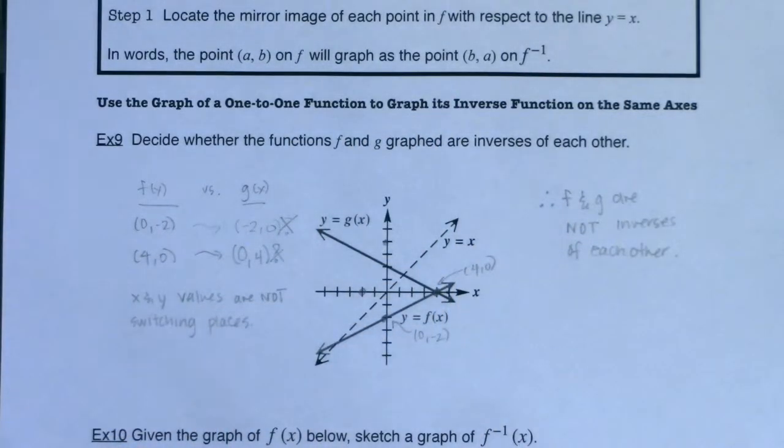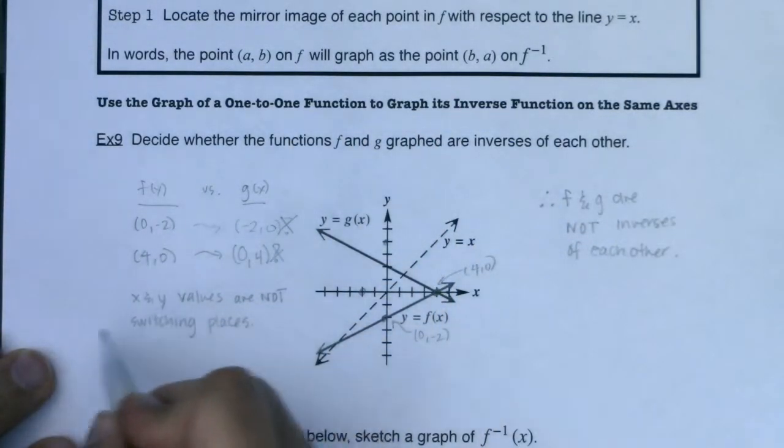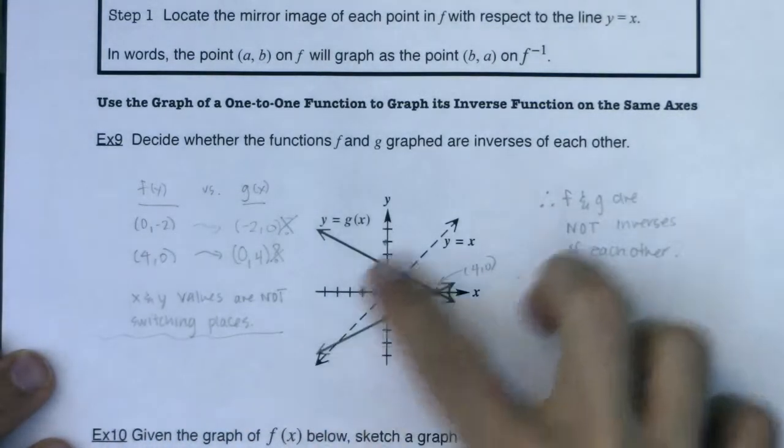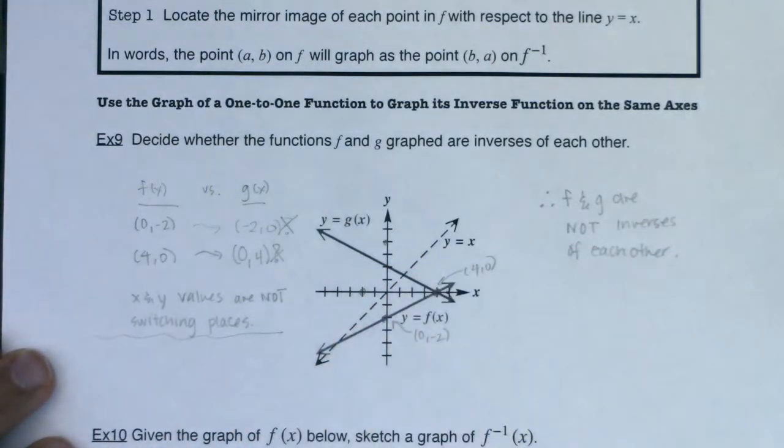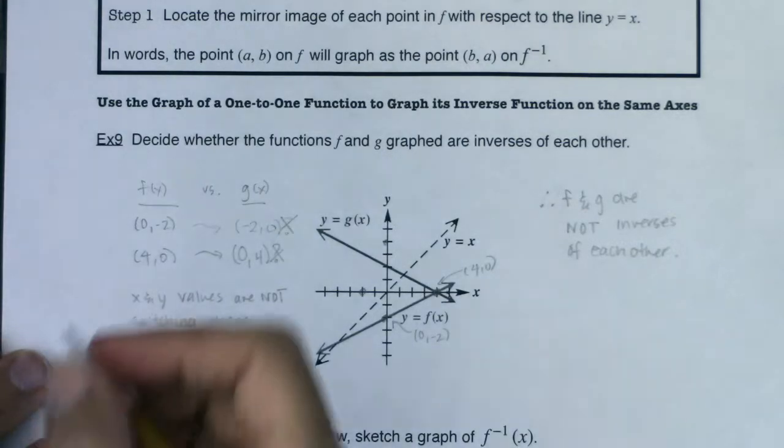All right, so this was the totally numerical approach. I had mentioned also that you might be able to just initially graphically see that the line y equals x was not a line of symmetry between the two functions.